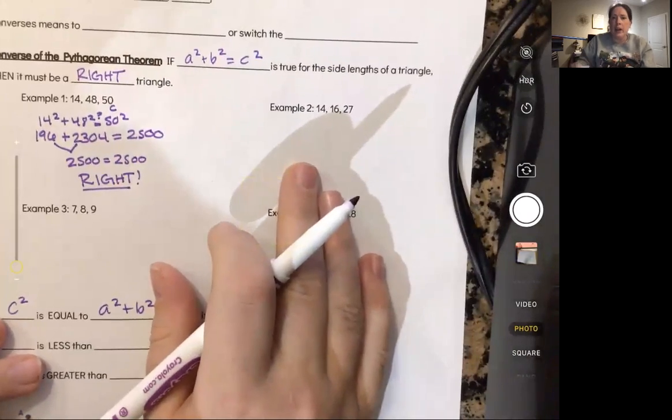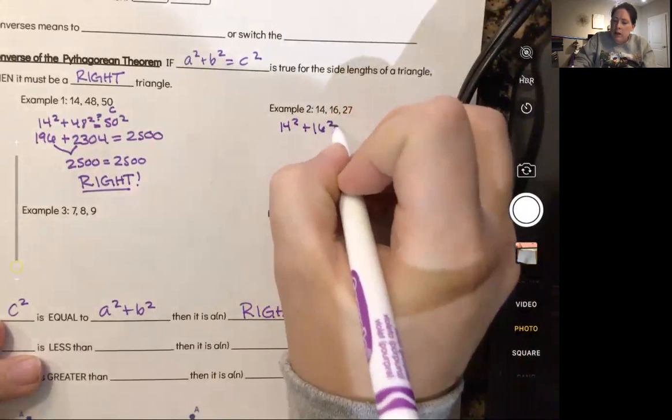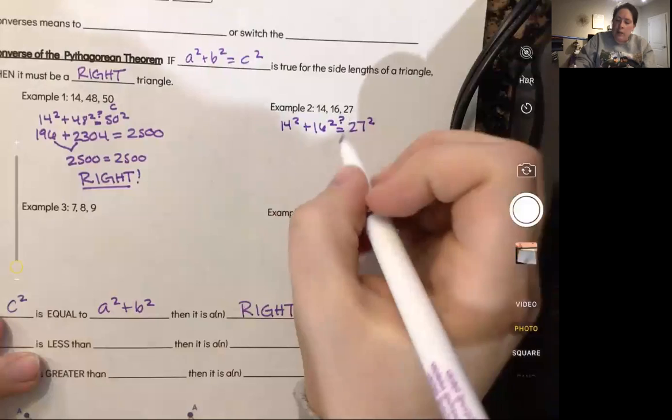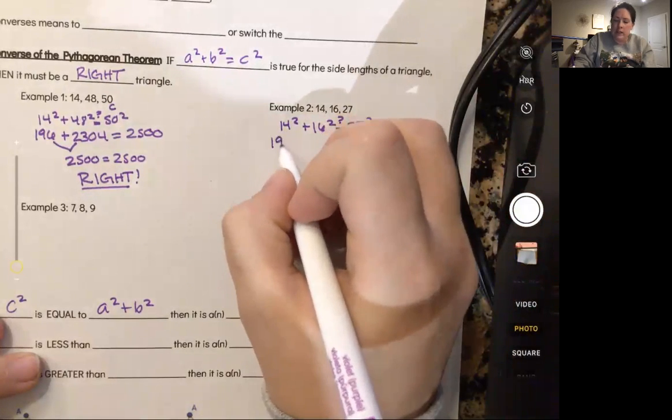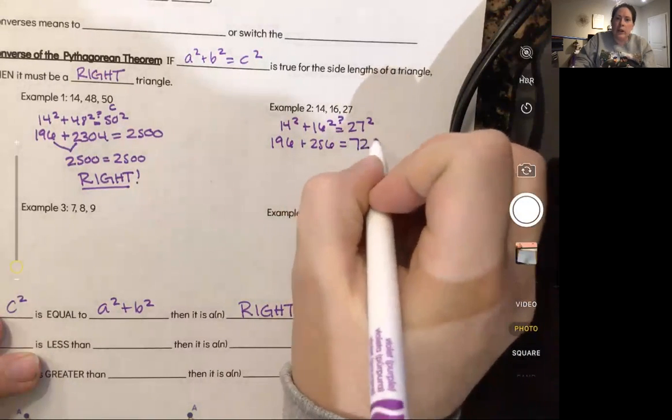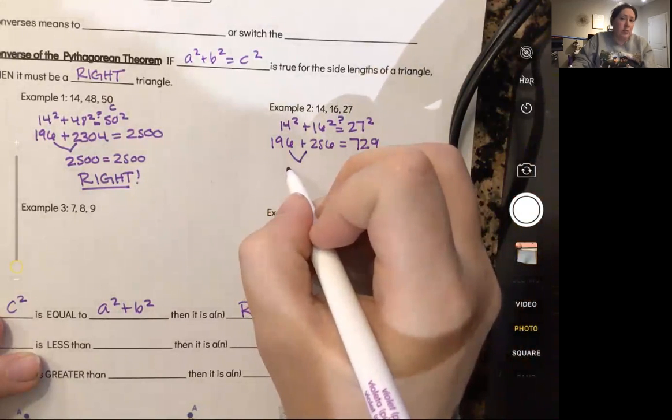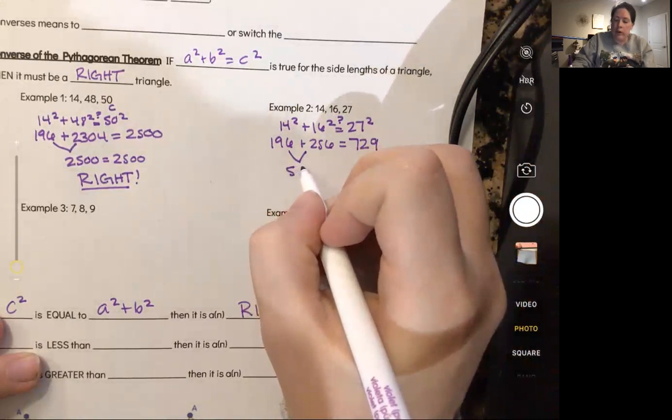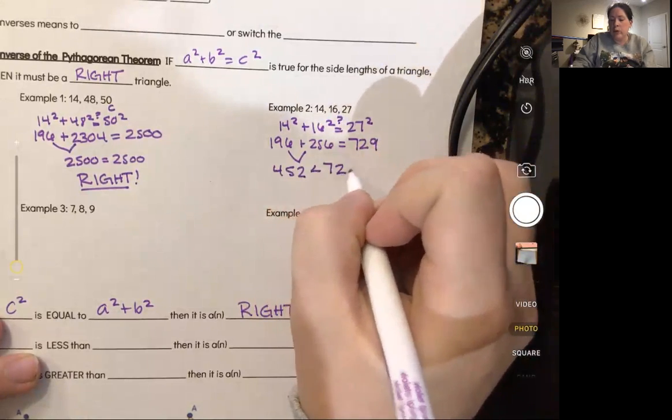Let's look at example two real quick. Again, I'm going to throw this in and see does this actually work. So we get that this one is 196 plus 256, and seeing if that equals 729. When we add these two together, see I'm kind of cheating on my little cheat sheet over here, we get 452 which is less than 729.